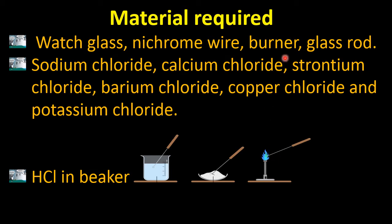We need a burner to provide heat and flame so that we can observe how the flame changes its color with respect to these ions. The glass rod is used to hang our nichrome wire so that we can carry out this practical.